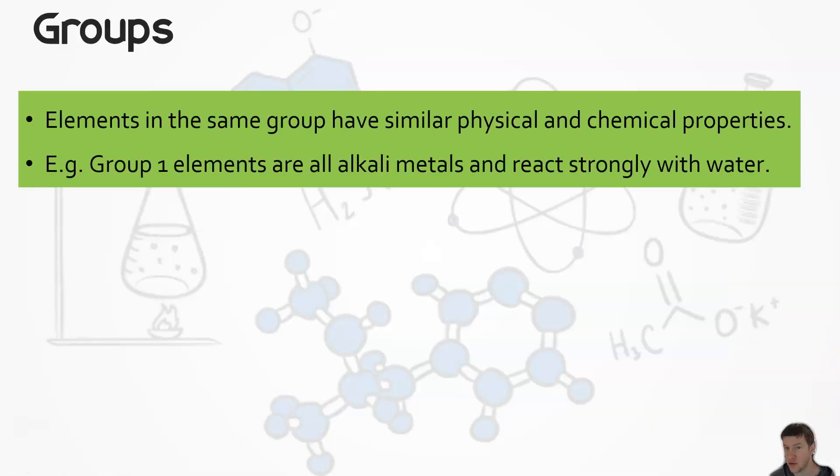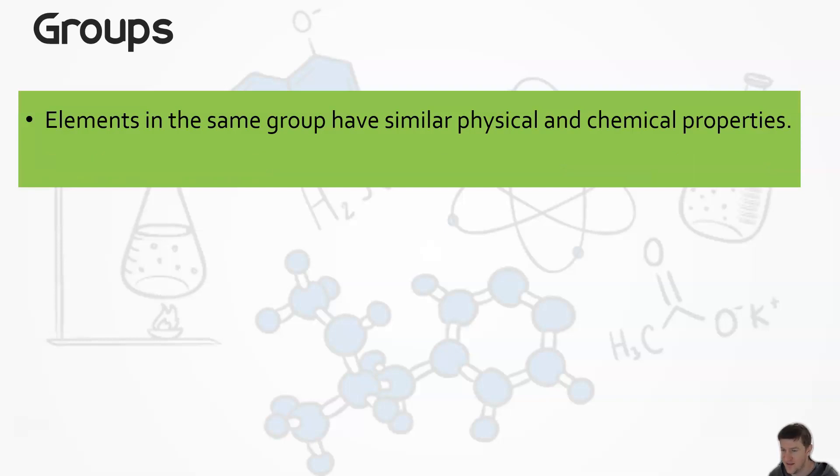So elements that have the same group have similar physical and chemical properties. That's why they were put in that column as well. For example, the group one - that first vertical column in the periodic table - are all what we call alkali metals and they react very strongly with water.